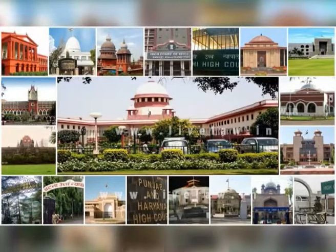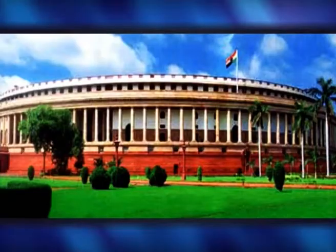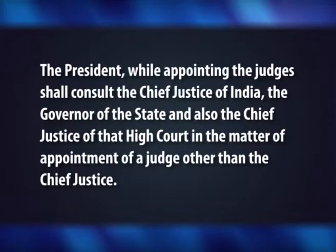Under Article 214 of the Constitution of India, there shall be a high court for each state, and every high court shall be a court of record and shall have all the powers of such a court including the power to punish for contempt of itself, under Article 215. Parliament may by law establish a common high court for two or more states and a union territory under Article 231. Every high court shall consist of a Chief Justice and such other judges as the President may from time to time deem it necessary to appoint. The President while appointing the judges shall consult the Chief Justice of India, the Governor of the State and also the Chief Justice of that High Court.